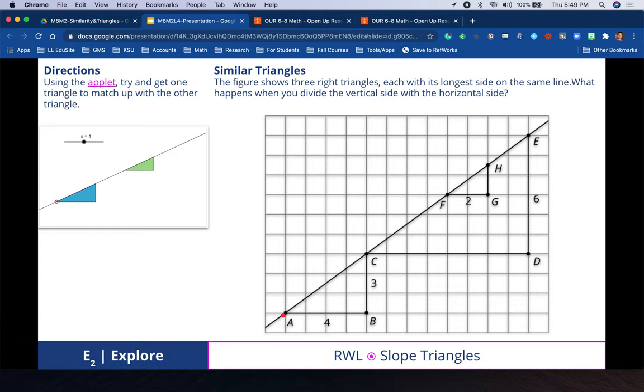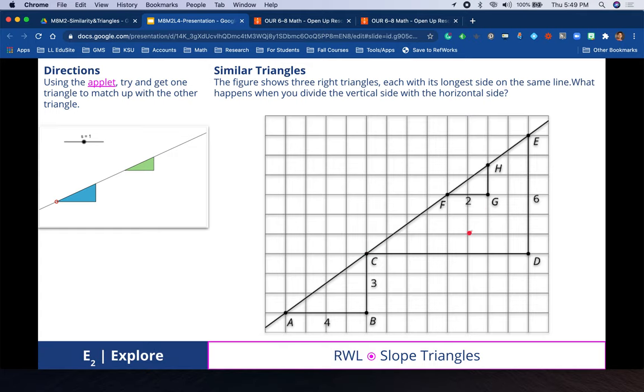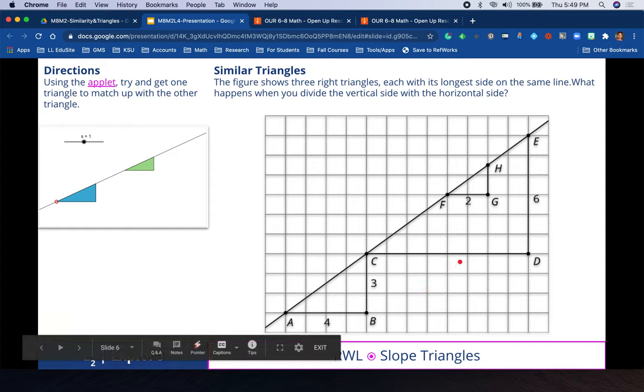Three-fourths is the ratio that is proportional to these other two triangles when comparing those two sides, the horizontal and vertical. But let's confirm that. Let's look at this example. E to D, vertically, is 6. C to D is 8. It's not labeled, it's unknown. But we can count them and confirm that 6 divided by 8, vertical divided by horizontal, is also three-fourths simplified.